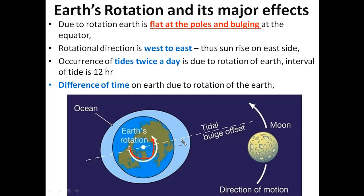Due to the rotation direction of west to east, this also plays a very important role when the Moon and Sun come in one row. The gravitational pull starts pulling water from the ocean, triggering tides twice a day due to the rotation of the Earth on its own axis — mainly at an interval of 12 hours.